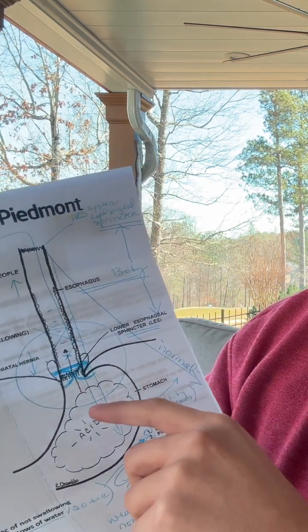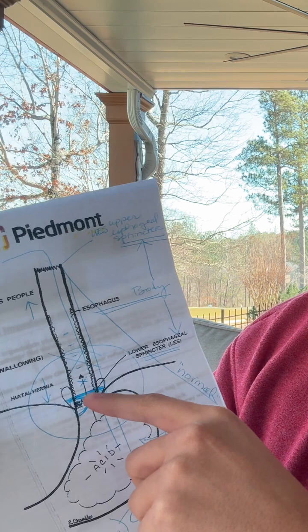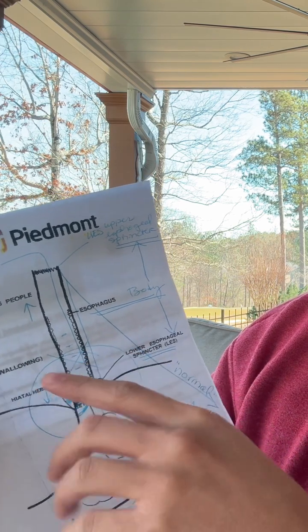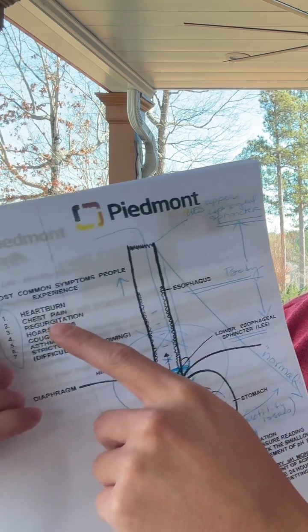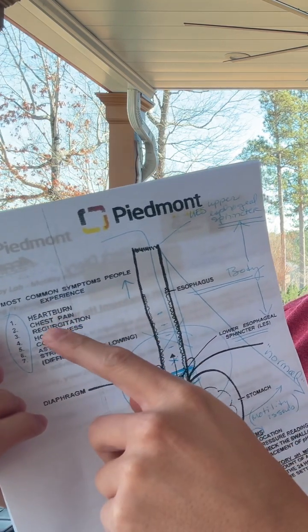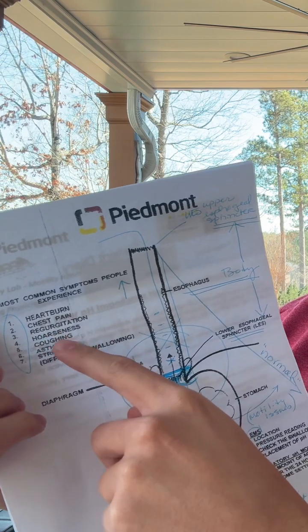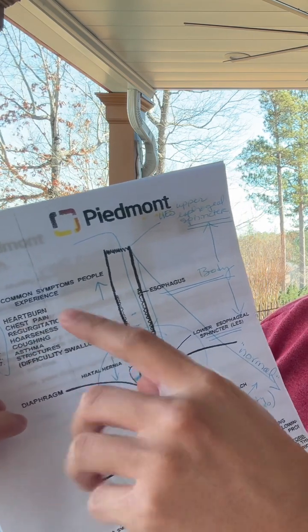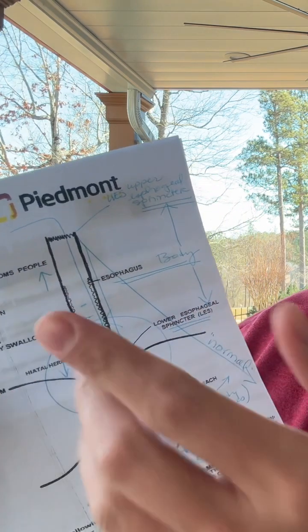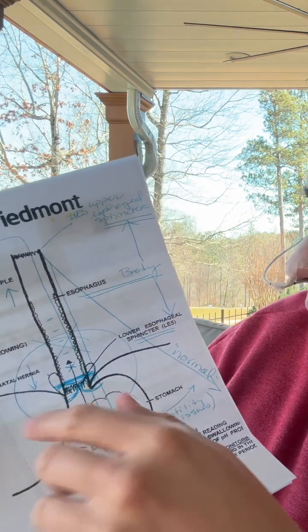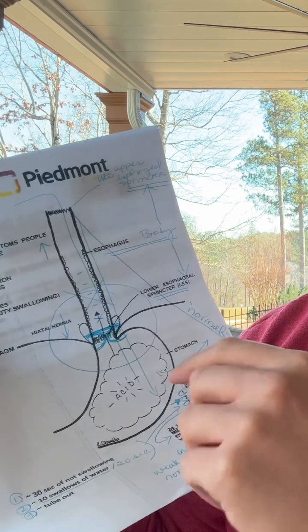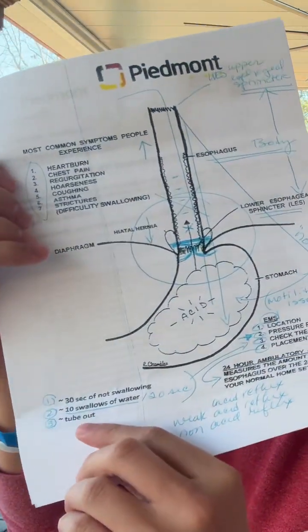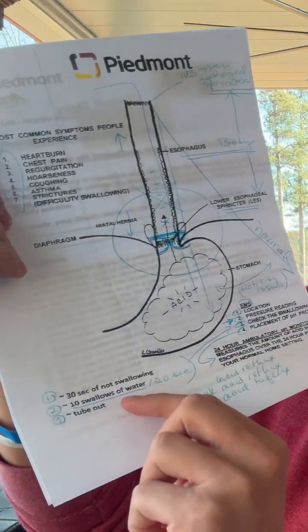Some of the things that obviously causes include acid heartburn, chest pain, regurgitation, hoarseness, coughing, asthma, strictures, and difficulty swallowing.